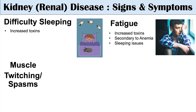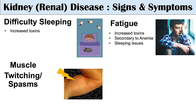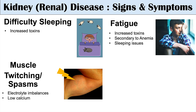The next symptoms are muscle twitching and spasms, often due to electrolyte imbalances. The kidney is very important in balancing electrolytes, and if there are imbalances, this can lead to issues with muscle contractions and spontaneous muscle twitching and spasms. We often see low calcium and high phosphate with kidney disease, which contribute to these muscle spasms and twitching.